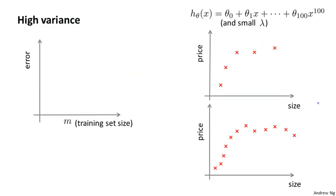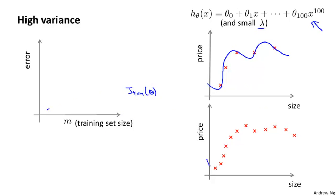Next, let's look at the setting of a learning algorithm that may have high variance. If you have a very small training set and you're fitting a very high-order polynomial — say a hundredth-degree polynomial — with a fairly small value of lambda, you'll end up overfitting this data very well. So if the training set size is small, our training error J_train of theta will be small. As the training set size increases, it becomes slightly harder to fit the dataset perfectly, so J_train increases a bit, but the training set error will still be pretty low.